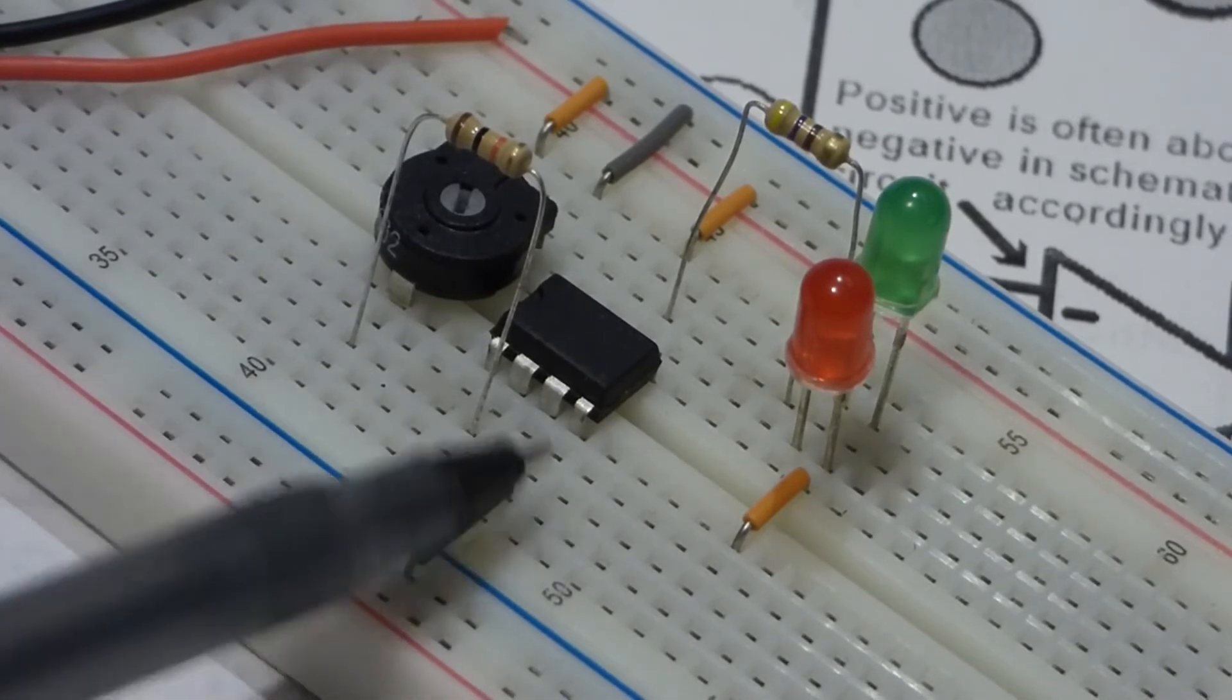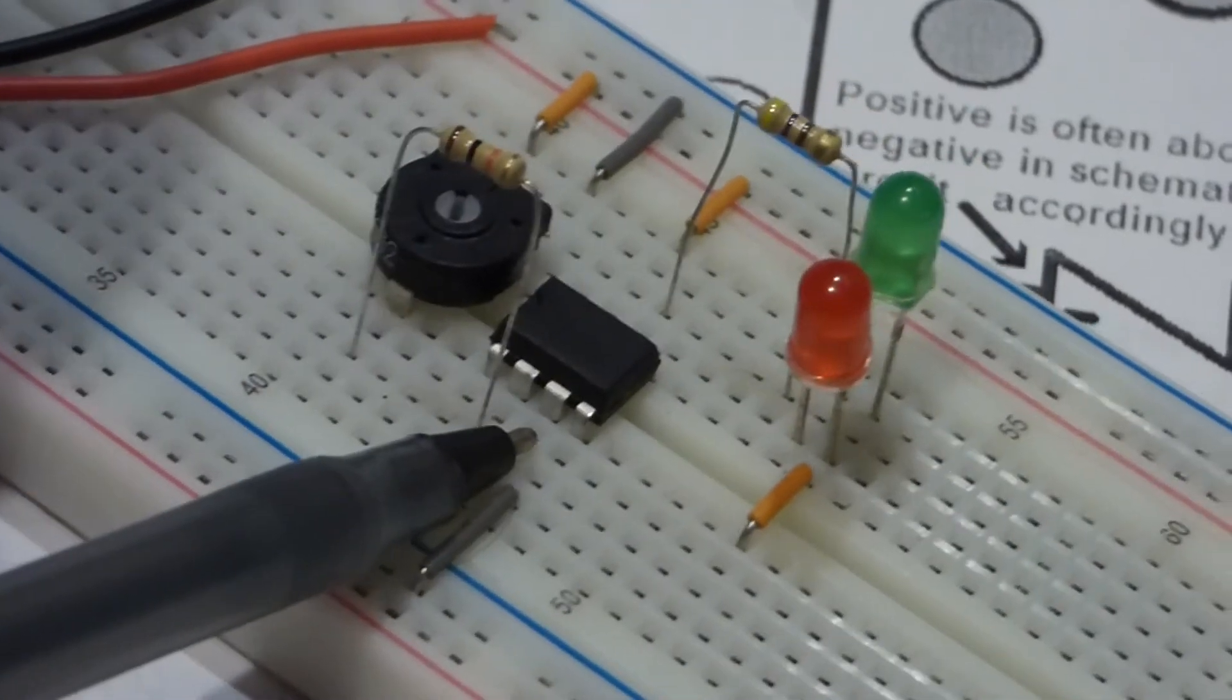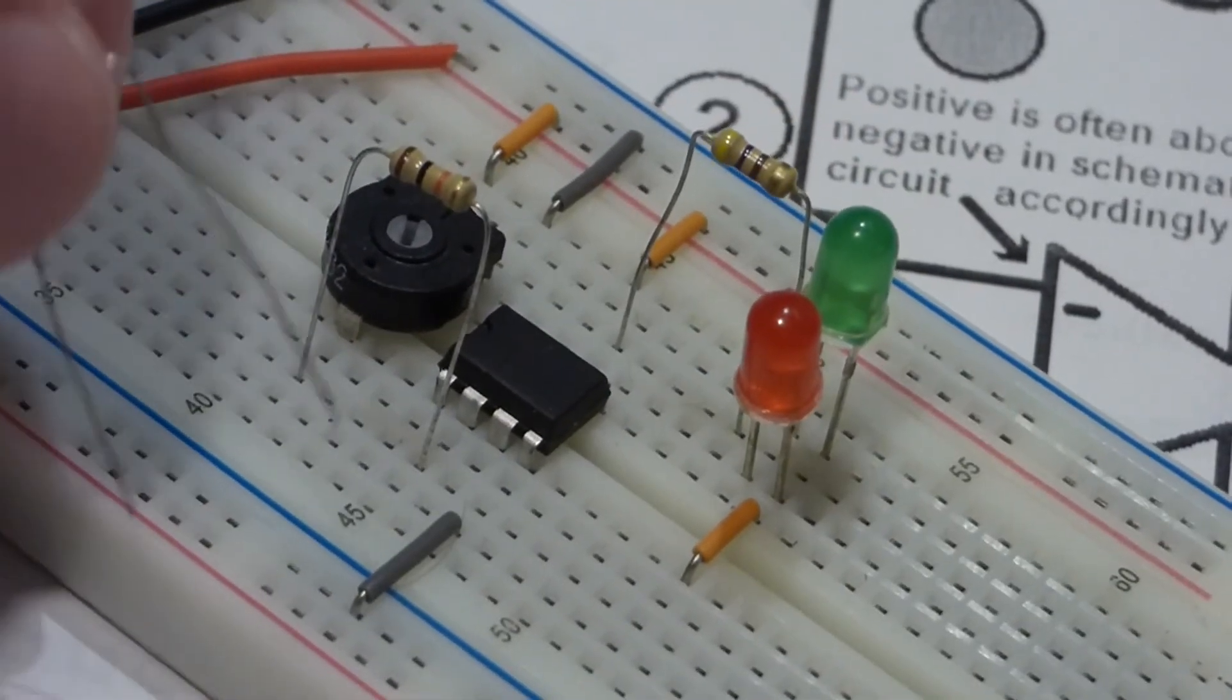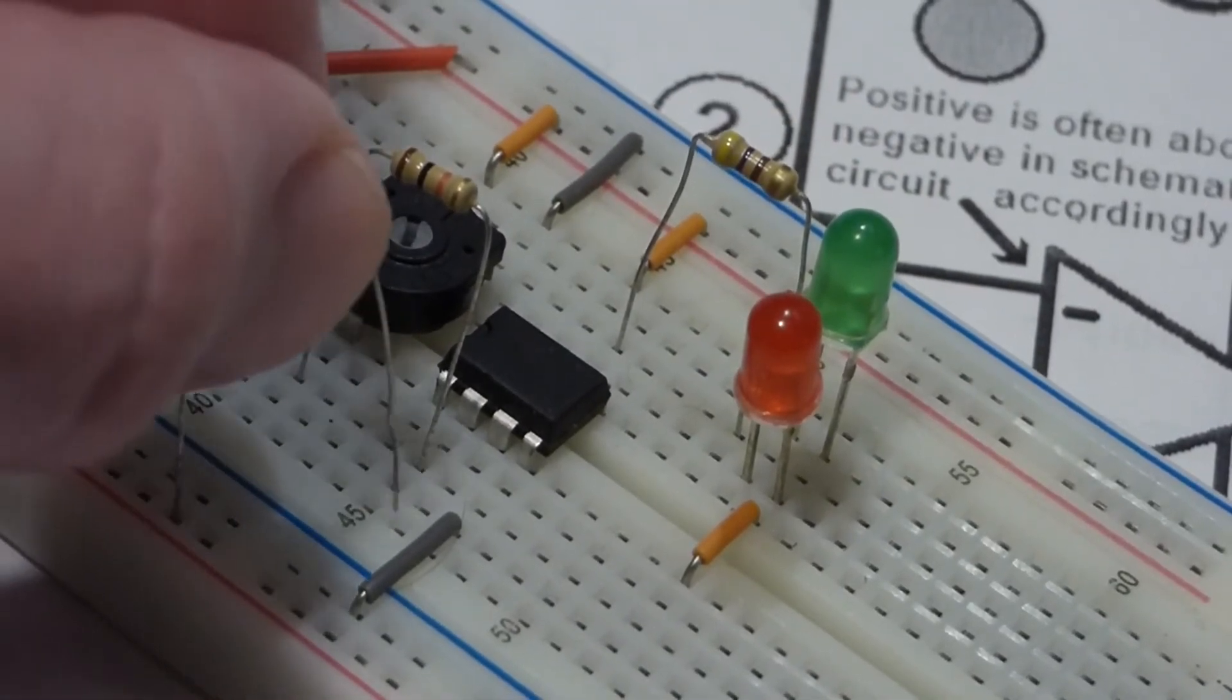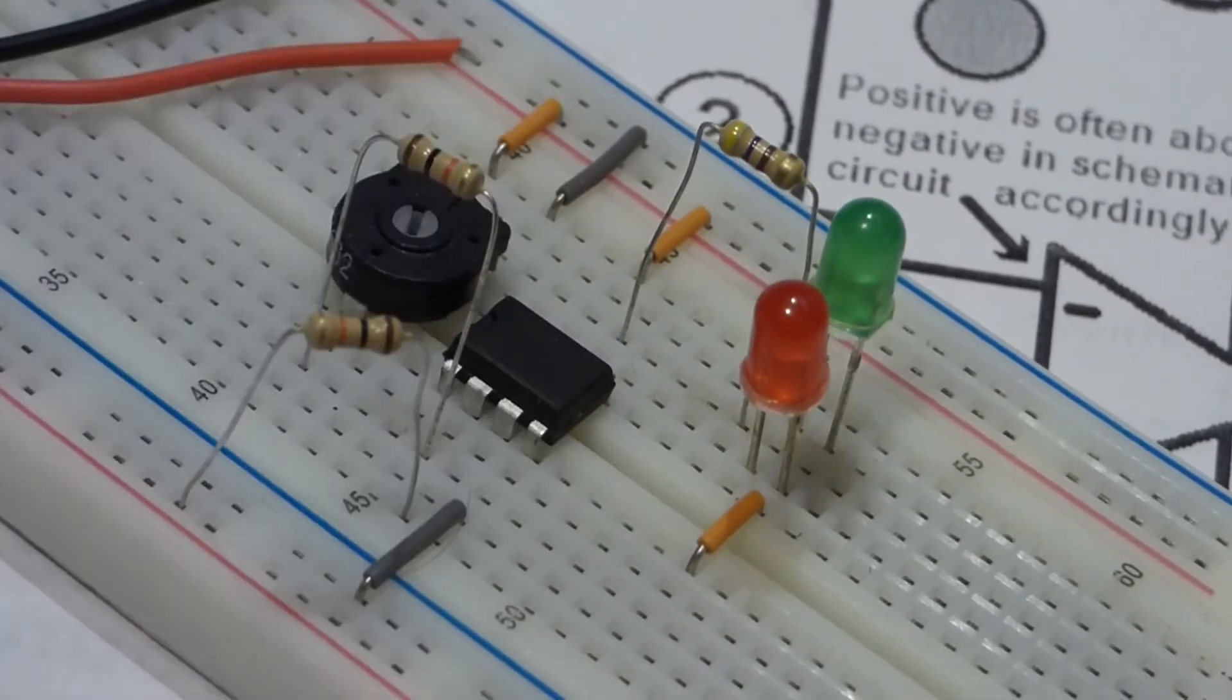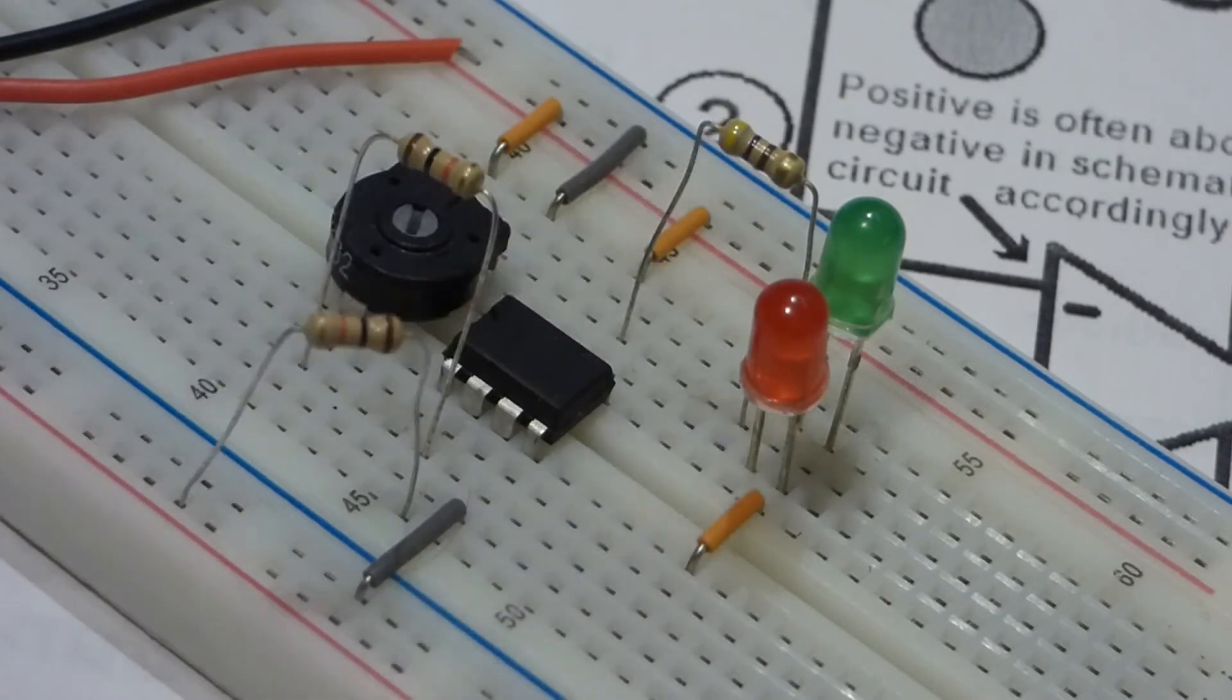Now for the non-inverting pin, the input, we're going to attach one—all of the resistors I'm going to use now are 10k resistors. This other one is just for the load, that's unrelated.